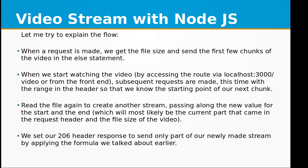Let me explain the flow. When a request is made, we get the file size and send the first few chunks of the video. In the else statement, when we start watching the video by accessing the route at localhost:3000/video, or from the front end, subsequent requests are made — this time with the range in the headers so that we know the starting point of our next chunk. We read the file again to create another stream, passing along the new start and end values, and set our 206 header response to send only part of our newly made stream.